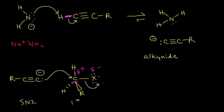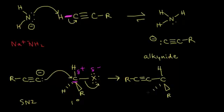The electrons kick off onto the halogen as we draw the product: R group — carbon triple-bonded to carbon — now bonded to the new carbon, with a hydrogen up, the R group coming out, hydrogen going back, and the halogen with four lone pairs and a −1 formal charge as the halide anion. This is an alkylation reaction — we put an alkyl group onto our alkyne and formed a new carbon–carbon bond.